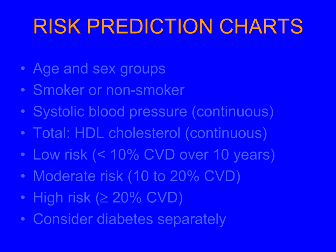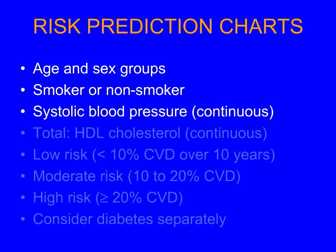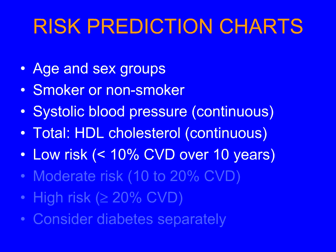We can use risk prediction charts. We look at our patients' age, sex, whether they smoke or not. We measure their systolic blood pressure because the risk increases continuously with blood pressure. We look at their lipids — most people now use total cholesterol and HDL cholesterol, which are simple to measure and you don't need a fasting blood sample. The ratio of total to HDL cholesterol is strongly associated with risk. Most people divide middle-aged people into those at low risk — less than 10% risk of coronary heart disease or stroke over 10 years — moderate risk 10 to 20%, and high risk greater than 20%.